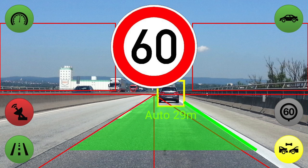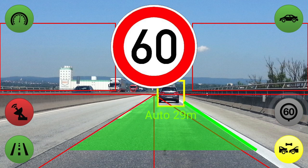You may have noticed that the control elements change their color from time to time. A gray color means that the system is currently switched off. You can switch a system on and off by pressing the control element.